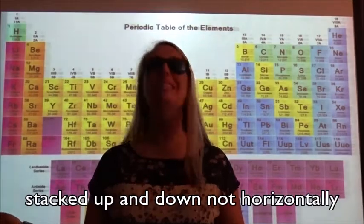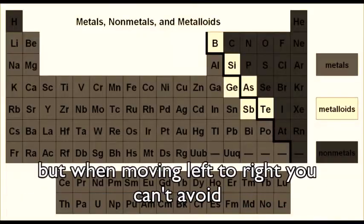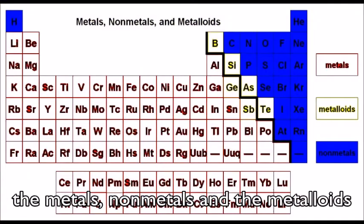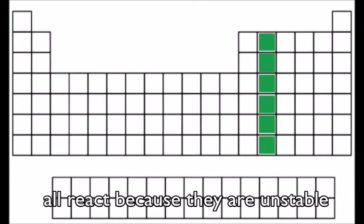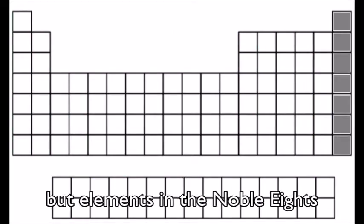Elements are grouped on reactivity, stacked up and down, not horizontally. Moving left or right you can't avoid the metals, non-metals, and the metalloids. Eight families on the periodic table all react because they are unstable, but elements in...